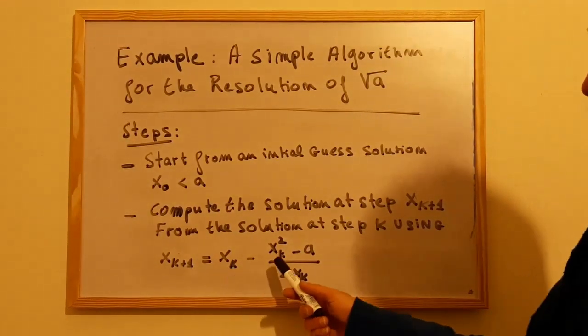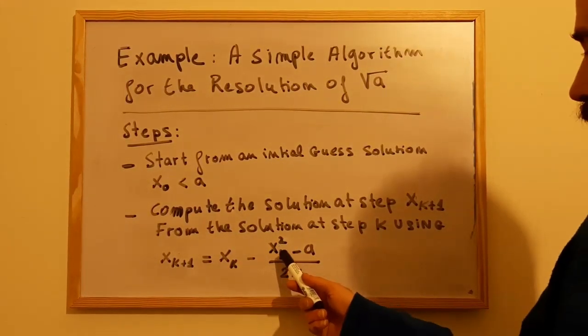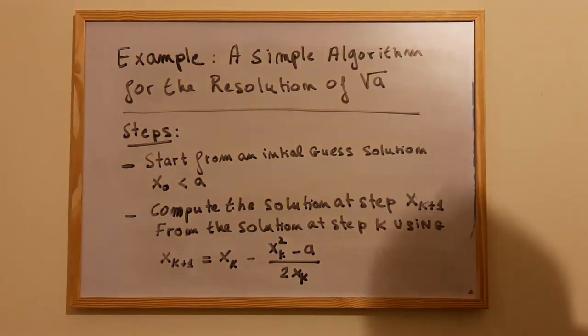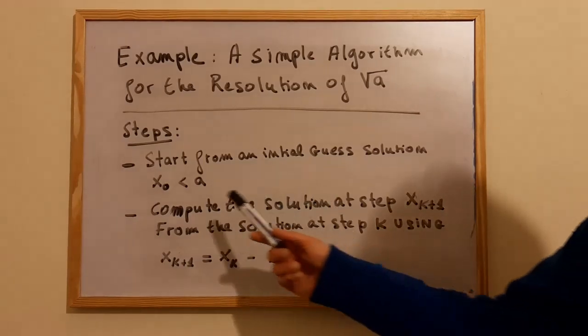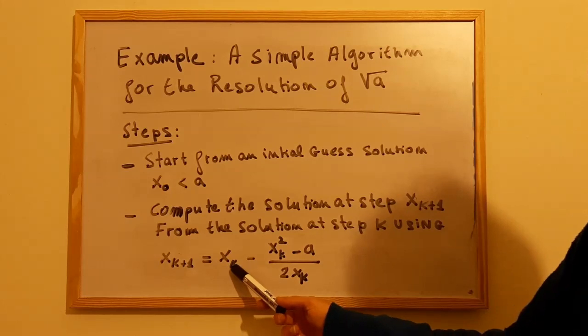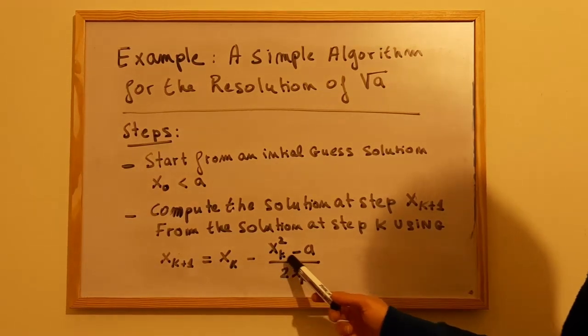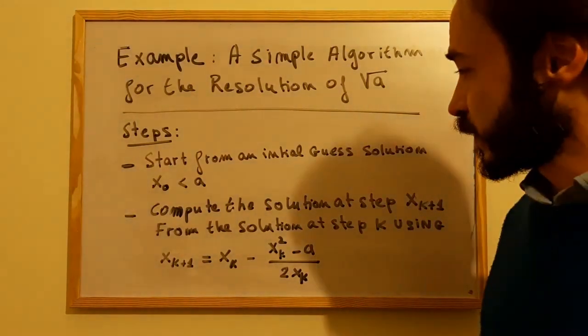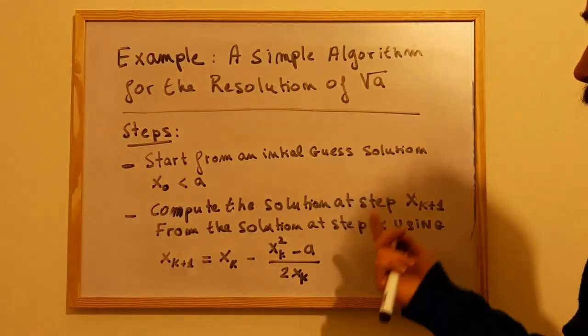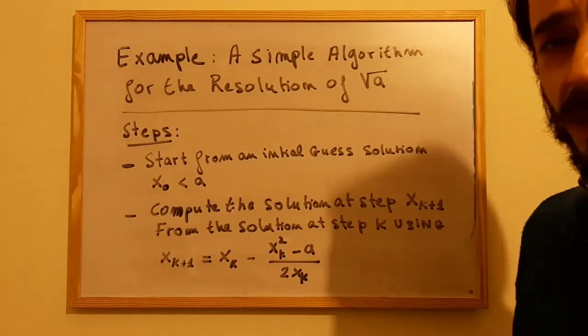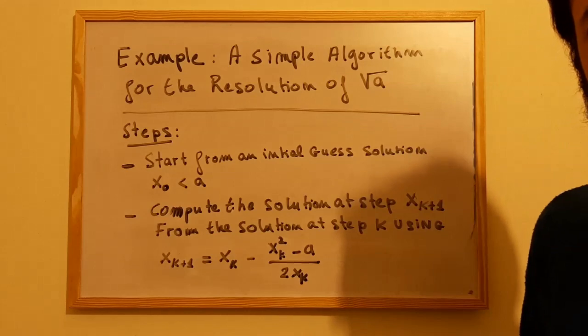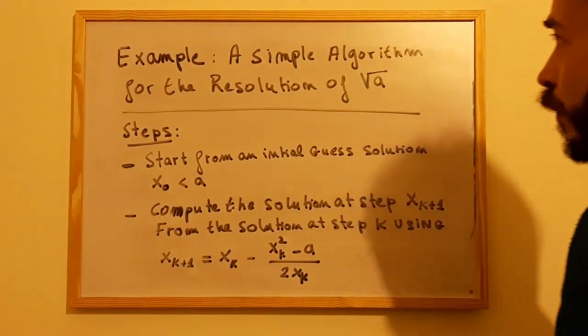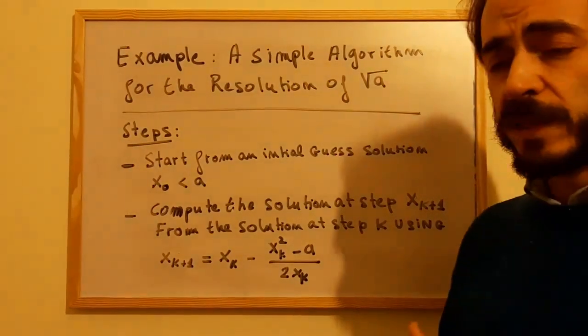Basically, I have x0, then I compute x1 = x0 - (x0^2 - a) / (2x0), and I repeat the process. So from x1, I calculate x2, x3, etc., and I will get at the end the exact value for the square root of a with a given precision.